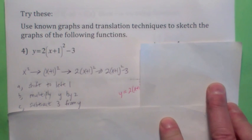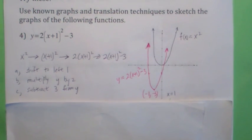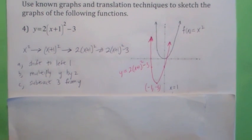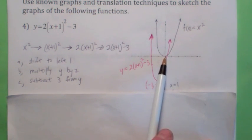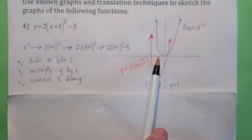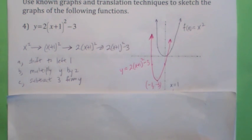So the graph should look kind of like this. Let's pay close attention to the vertex. The vertex was (0, 0). Under this transformation, you shift it 1 to the left, so now it becomes (−1, 0). You multiply y by 2, so it stays (−1, 0). But then you subtract 3 from y, so it becomes (−1, −3).